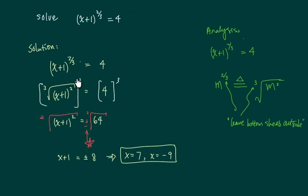I'm going to cube it on both sides to get rid of this cubic root. Then I have x plus 1 squared equals 64. Four to the cube is 64.